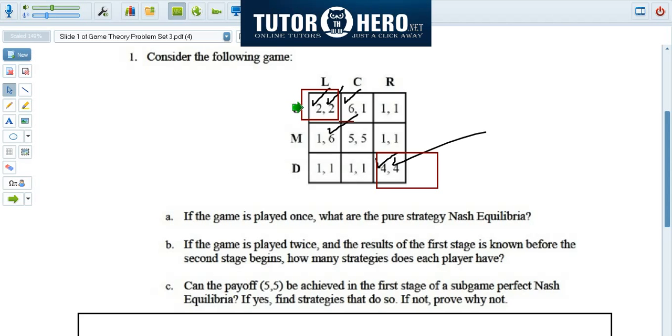For the row player, for example, in this box, when the column player is choosing left, the row player's best response is to choose up. Similarly, for the column player, when the row player is playing up, the column player's best response is to choose left. So they're mutually reinforcing responses. The same thing holds true down here.